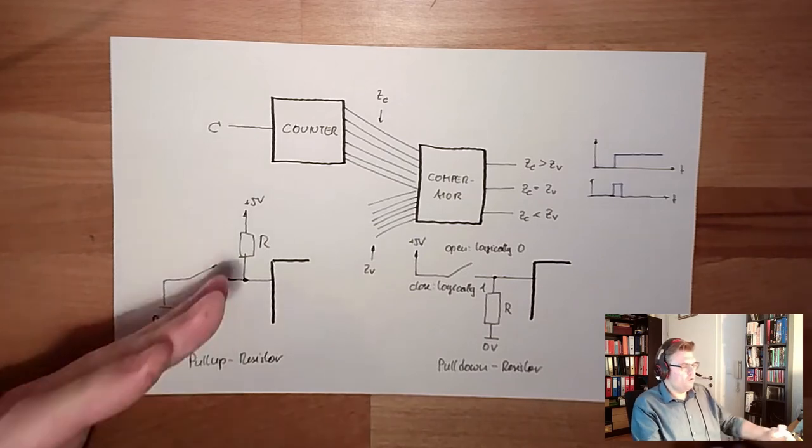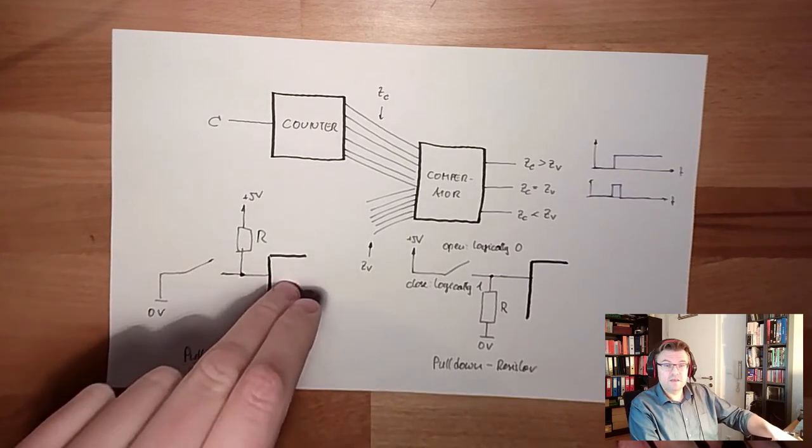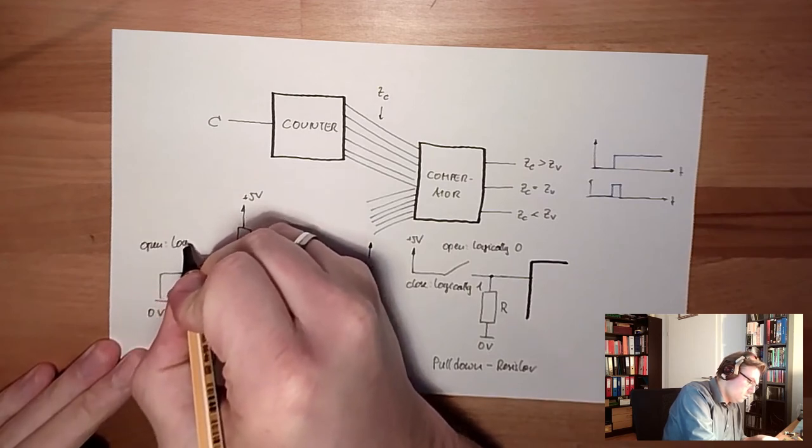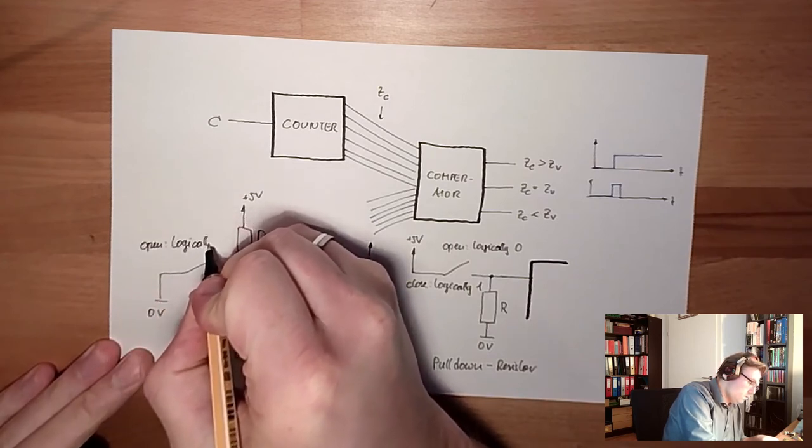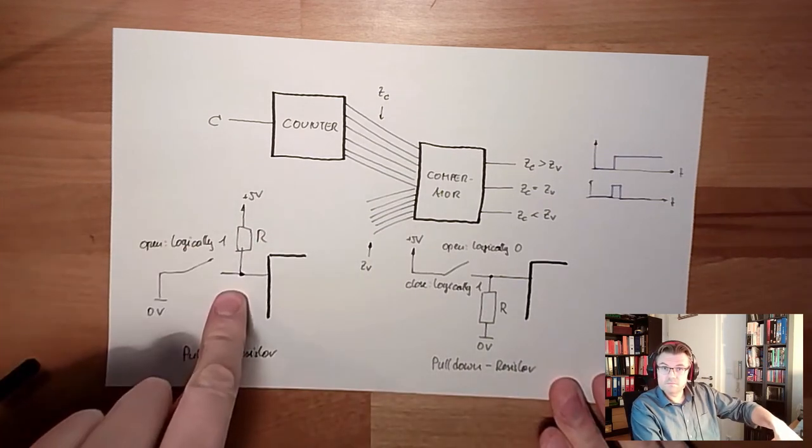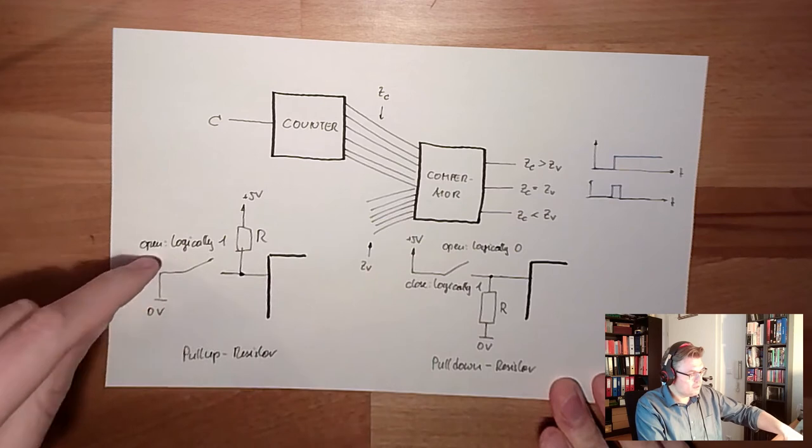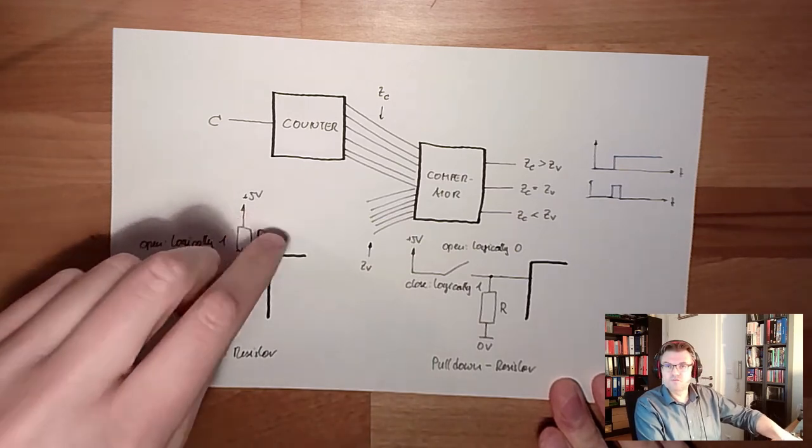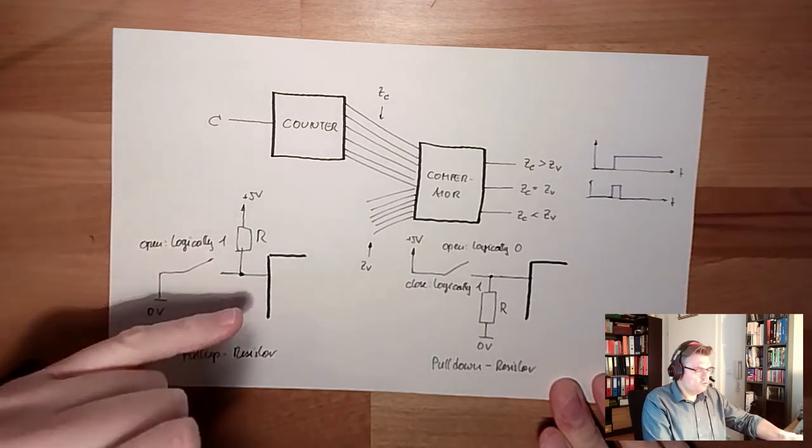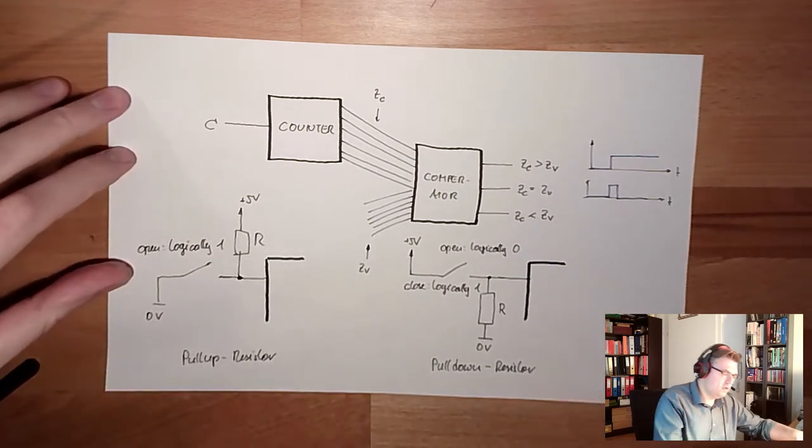So if we are open, we have here logically 1. And then if I close the contact, I pull this line down to 0V, because if the resistor is high enough, there is not much current running. So if I close it, it's 0V here, logically 0.